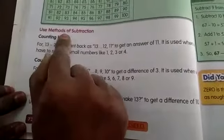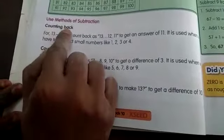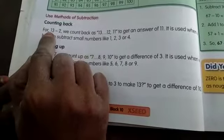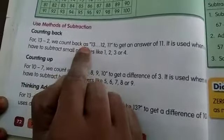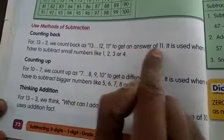Use methods of subtraction. Here you have given the methods. Counting back. For 13 minus 2, we count back as 13, 12, 11. We get an answer of 11.